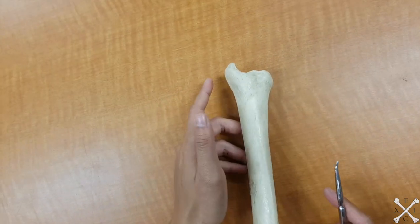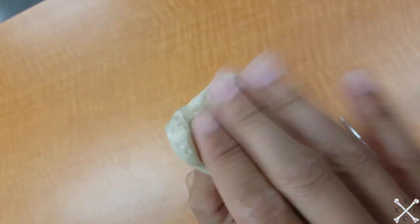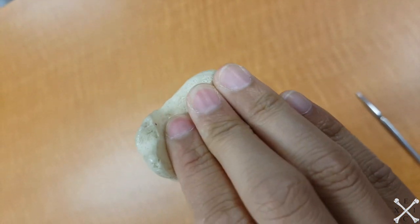Next up would be the articular surface for talus. That would be down here. That's actually where your foot, your talus bone, articulates with.